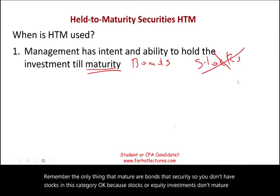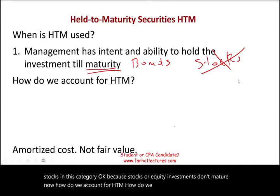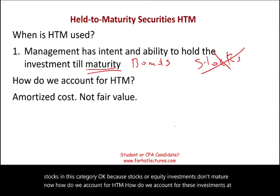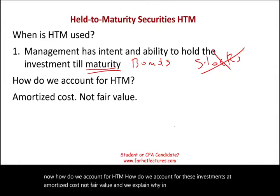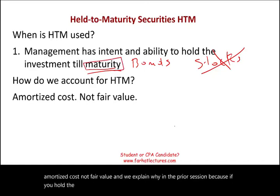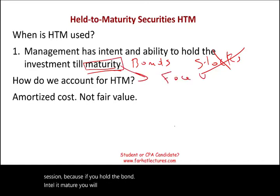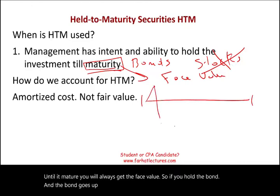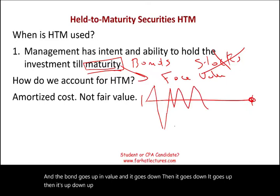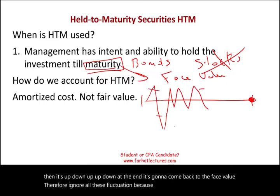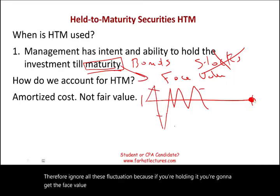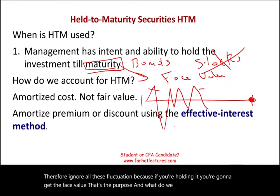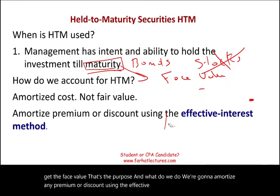How do we account for HTM investments? At amortized cost, not fair value. We explained why in the prior session: because if you hold the bond until it matures, you will always get the face value. So if the bond fluctuates in value, at the end it's going to come back to the face value. We ignore all these fluctuations. We amortize any premium or discount using the effective interest rate method, generally speaking.